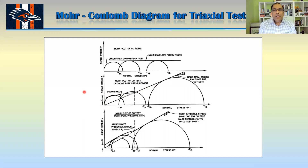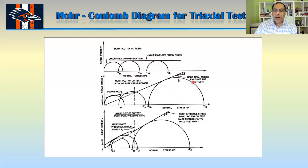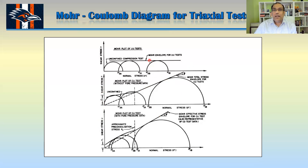So we know three things: sigma 1, sigma 3, and the deviator stress. What we usually do is put those numbers on the diagram, make a circle, and then try to draw the tangent so that it just touches a single point. Once I draw that, I can identify my failure plane for each of the three different cases.